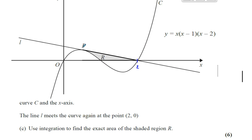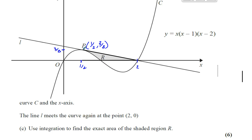The line touches the curve at P where it's a tangent, and then it hits the curve again at the point 2 on the x-axis, (2, 0). Use integration to find the exact area of the shaded region R. We know the coordinates of the point P are one half and three eighths — we learned that from part A. So this point here is a half, and this point here is three eighths, those are the coordinates of P.